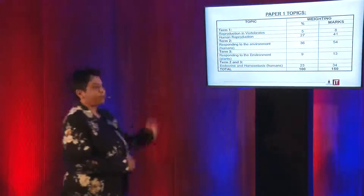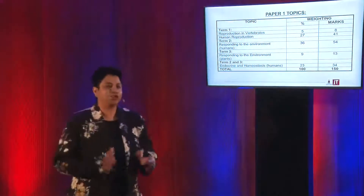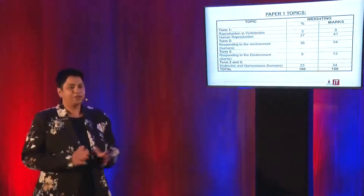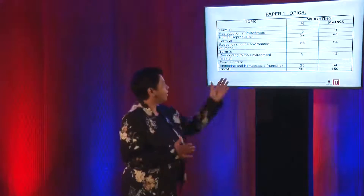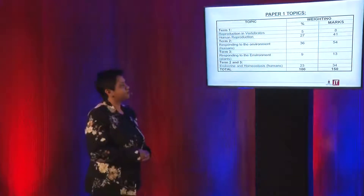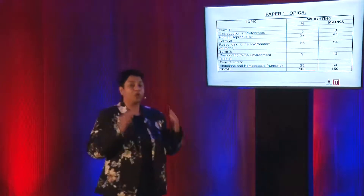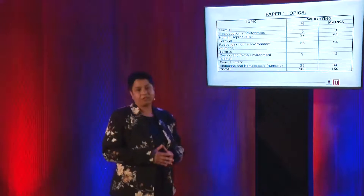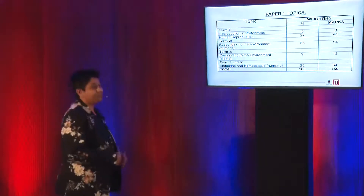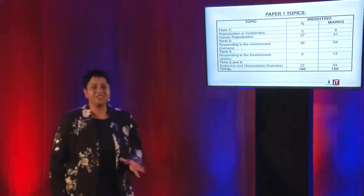Looking at paper 1 topics on the screen: paper 1 has a lot of topics and you're writing on the 19th of November. The first topic is reproduction in vertebrates — eight marks. Now I know some of you are thinking it's only eight marks, let me leave it for last. But what if the examiner decides to join two questions together? My advice is don't leave out questions or sections that have little marks.